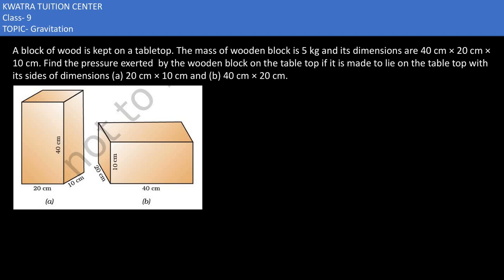Let's have a look at the other question. It says a block of wood is kept on a tabletop. The mass of wooden block is 5 kg. So mass is given as 5 kg. Then they are saying its dimensions are 40, 20 and 10.